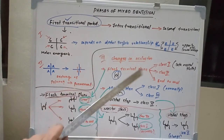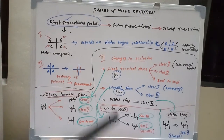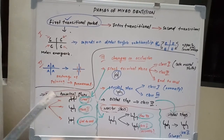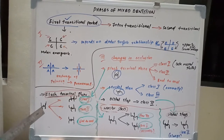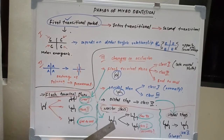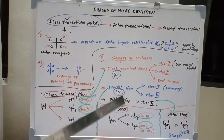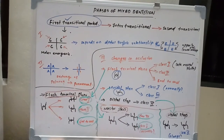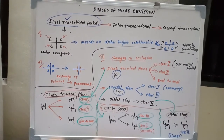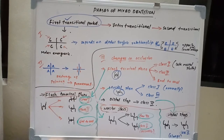Mesial step most commonly gives rise to Class I in permanent dentition, or it can give rise to Class III. Distal step will always lead to Class II. So to summarize: flush terminal plane can give rise to Class I, Class II, or end-to-end relationship; mesial step gives Class I or Class III; and distal step always leads to Class II relationship in the permanent dentition.